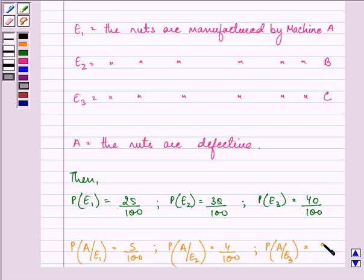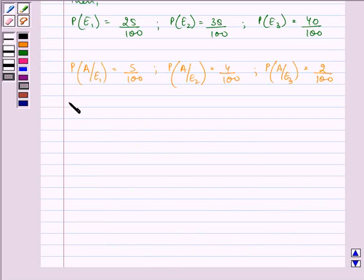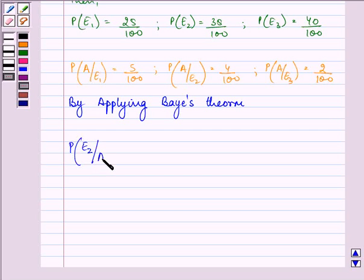So by applying Bayes' theorem, we will find out that the defective nut was from machine B. So it is probability of event E2 occurring that we have picked out this defective nut from plant B.